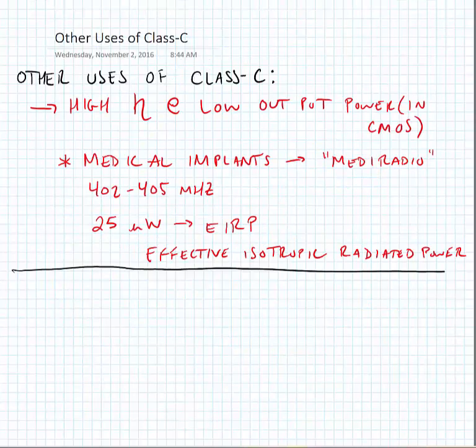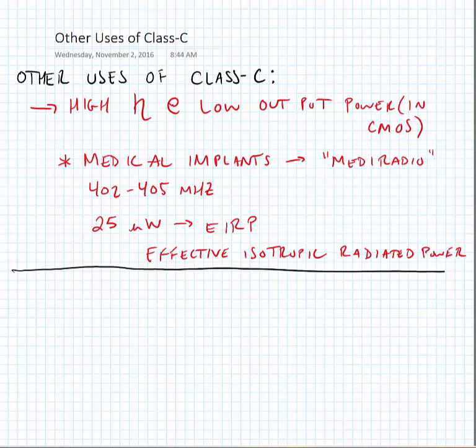Now I'll point out that there are a couple of other uses for the Class-C other than the Doherty amplifier. It provides a high efficiency at low output power, and this is good in low power radios that use constant envelopes, such as for medical implants or MICS radio, which is a band from 402 to 405 megahertz. This band only calls for 25 microwatts of EIRP, or effective isotropic radiated power.